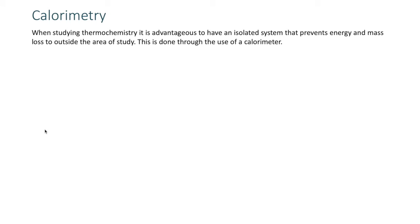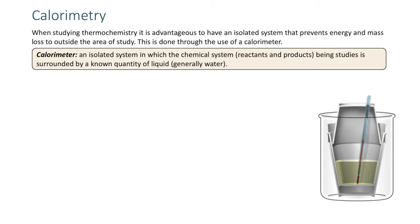Calorimetry is what we use to study thermochemistry. It's advantageous to have an isolated system that prevents mass and energy loss to an outside area. This is an idealized system, and we use the calorimeter to approximate it. A calorimeter is an isolated system in which the chemical system — the reactants and products — are being studied, surrounded by a known quantity of liquid, which is generally water.